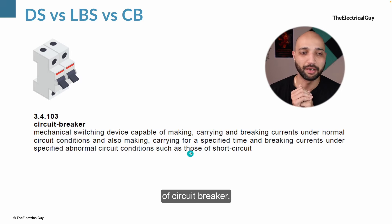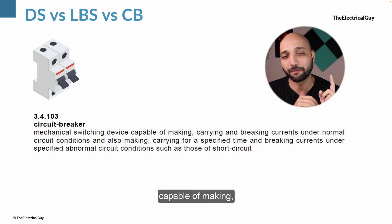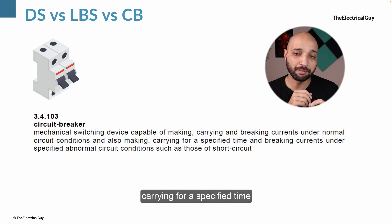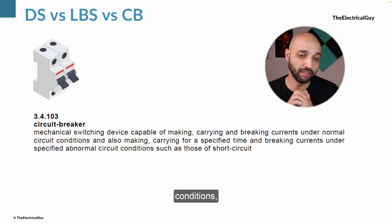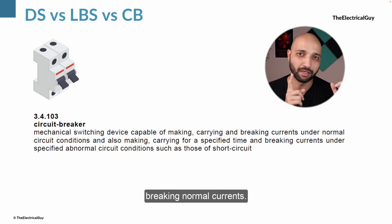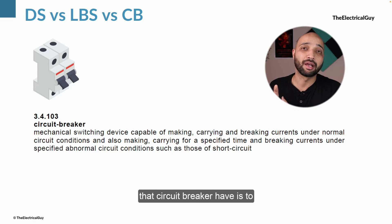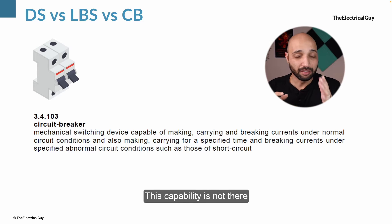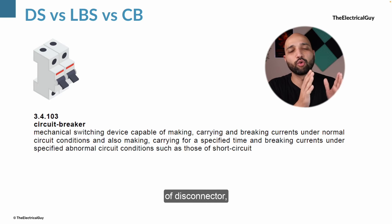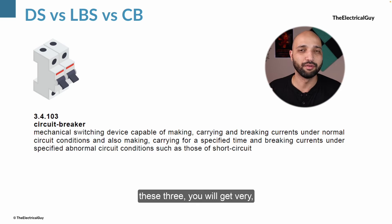Now the definition of circuit breaker per IEC: a circuit breaker is a mechanical switching device capable of making, carrying and breaking currents under normal circuit conditions, and also making, carrying for a specified time, and breaking currents under specified abnormal circuit conditions such as those of short circuit. So circuit breakers are capable of making and breaking normal currents, plus the additional capability to make and break huge fault short circuit currents — a capability not present in switch disconnectors or disconnectors.